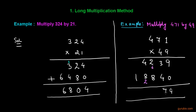Now we add: 9 plus 0 is 9; 3 plus 4 is 7; 2 plus 8 is 10 — write 0 and carry 1; 1 plus 4 is 5; 5 plus 8 is 13 — write 3 and carry 1; 1 plus 1 is 2. So this is the solution: 471 times 49. This is the long multiplication method.